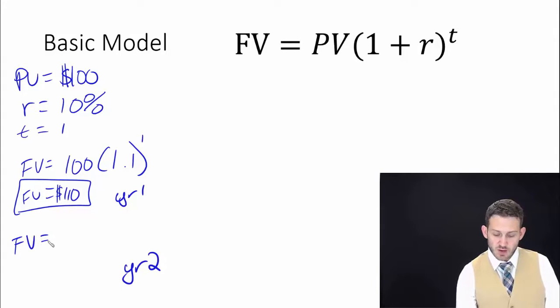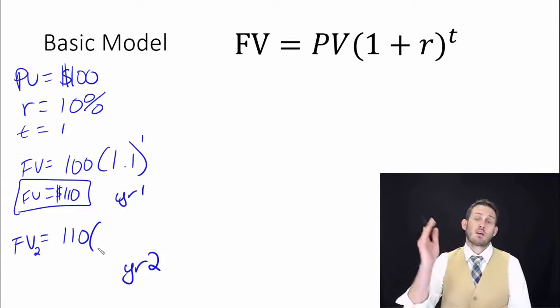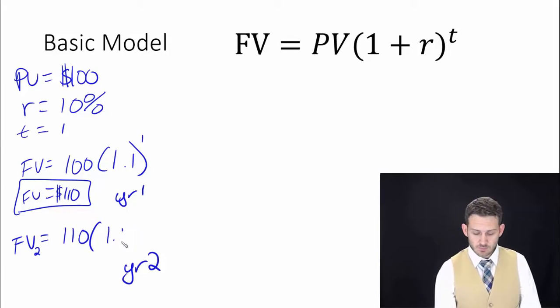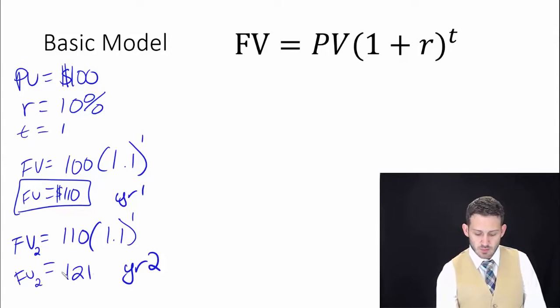So this is for year one and now we're going to look at year two. We're going to figure out what our future value is in year two. We're going to have 110 as our starting value. At the end of the year we're putting 110 back in the account and it's still the 1.1 to the first, which tells us that we have a future value in year two of a hundred and twenty one dollars.